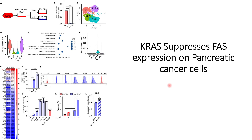As the topic suggests, KRAS suppresses FAS expression on the pancreatic cancer cells. FAS is the dead cell receptor expressed on the pancreatic cancer cells. To identify how KRAS mutations affect these FAS receptors, they developed cell lines from the tumor with doxycycline-controlled KRAS mutations. When doxycycline is introduced in those cells — PIKP785 cells — KRAS is on, and when doxycycline is not induced, KRAS is off.